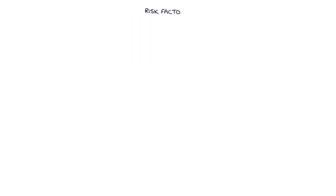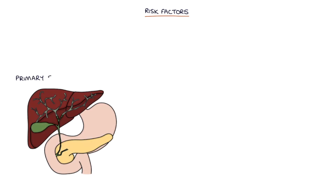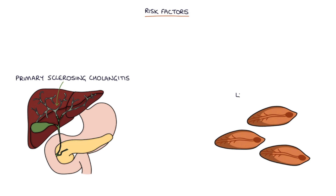The key risk factors for cholangiocarcinoma to remember are primary sclerosing cholangitis and liver flukes, which are a parasitic infection.